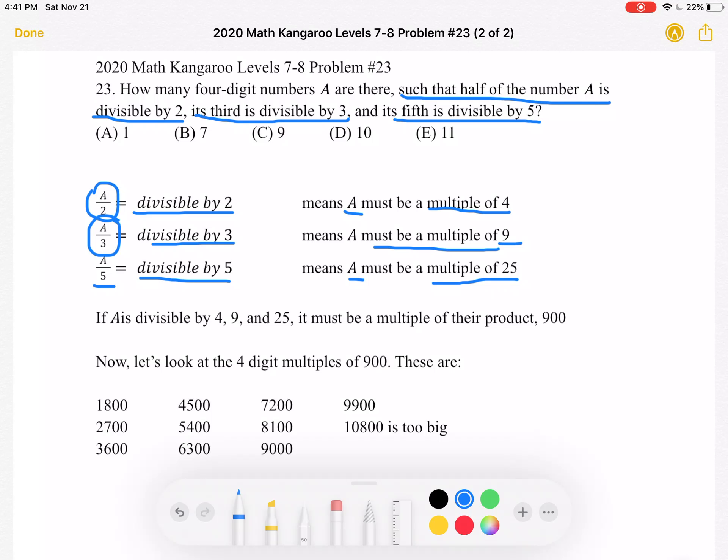So if A is divisible by 4, 9, and 25, it must be a multiple of their product, which is 900. Now let's take a look at the four-digit multiples of 900.